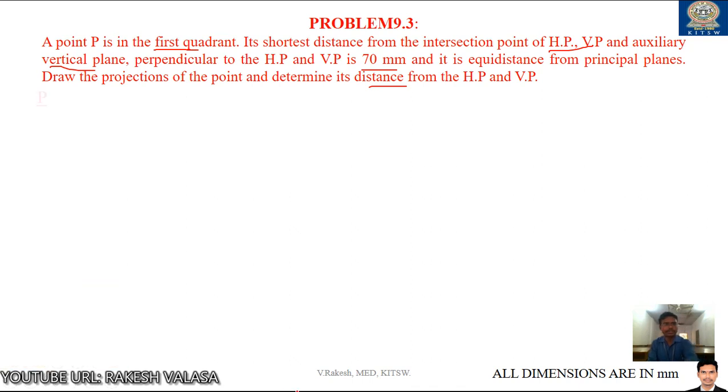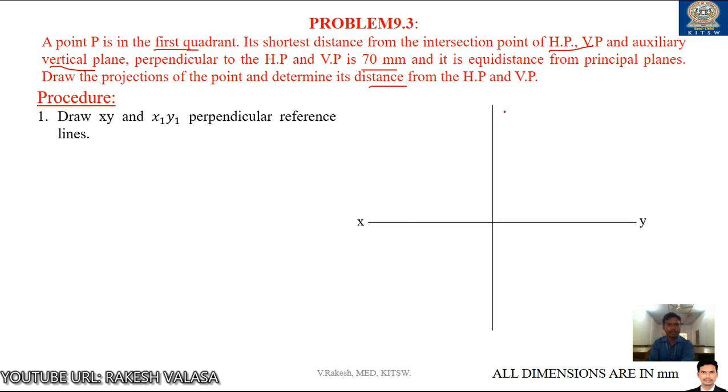Let us see the procedure. First, draw XY and X1Y1 perpendicular reference lines. This is the X1Y1 line. This is the vertical line. These both are perpendicular to each other. X1Y1, where O is the intersection of this XY line and X1Y1 line.